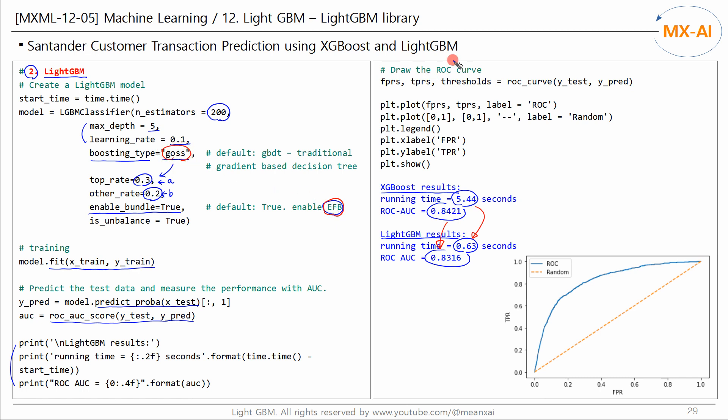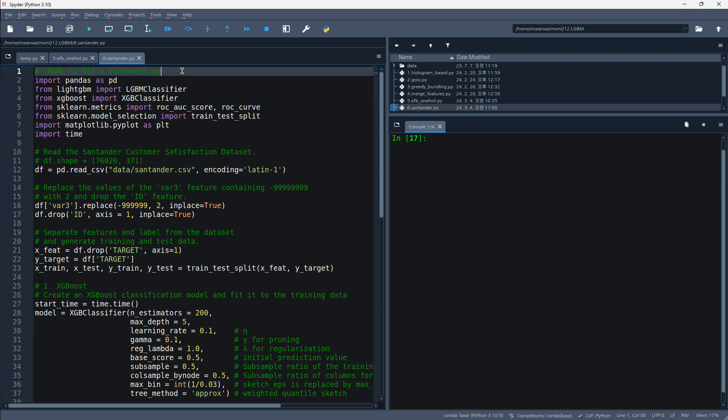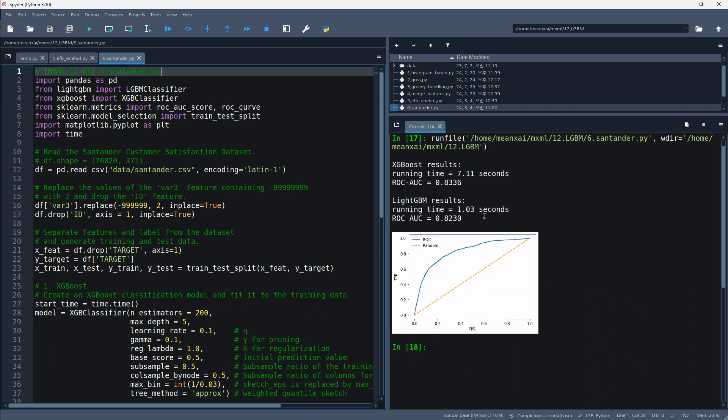And the ROC AUC curve came out like this. Let's run this code. XGBoost is currently running. The results came out like this.